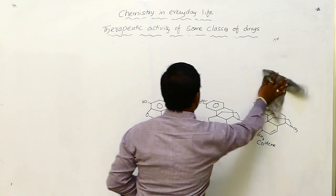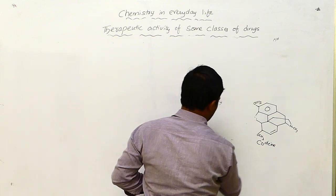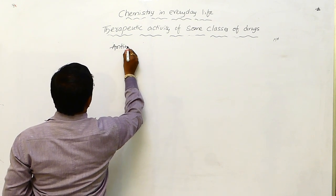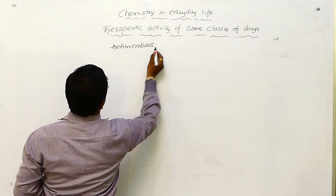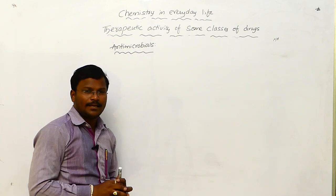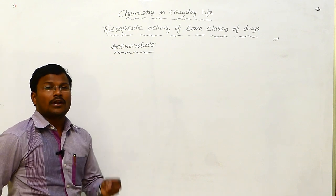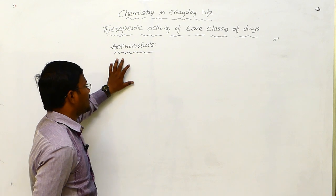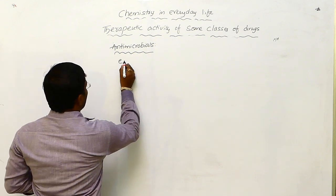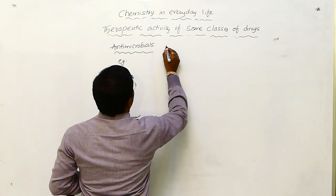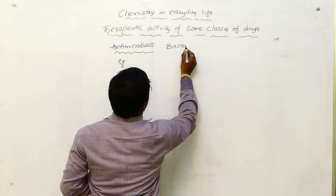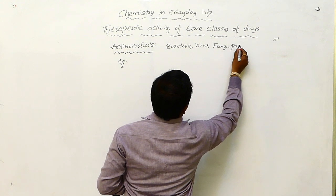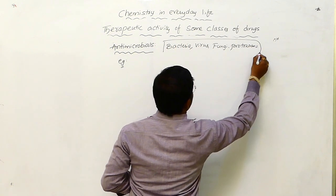After completion of this class of drugs, let us learn one more type: antimicrobial drugs, also called as antimicrobials. What are antimicrobials? The drugs which are used to resist the growth of microorganisms or to kill the microorganism are called as antimicrobials. Examples of microorganisms responsible for diseases in our body are bacteria, virus, fungi, and different protozoans. These are responsible for various types of diseases.